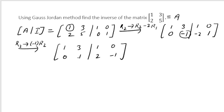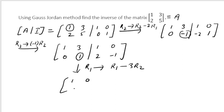Once we have 1s along the main diagonal, I need to make the element above the (2,2) pivot zero. I replace R1 by R1 minus 3 times R2. This gives: 1 0 | 1 minus 3×2 = 1 minus 6 = minus 5, then 0 minus 3×(minus 1) = 0 plus 3 = 3. So R1 becomes: 1 0 | minus 5, 3.